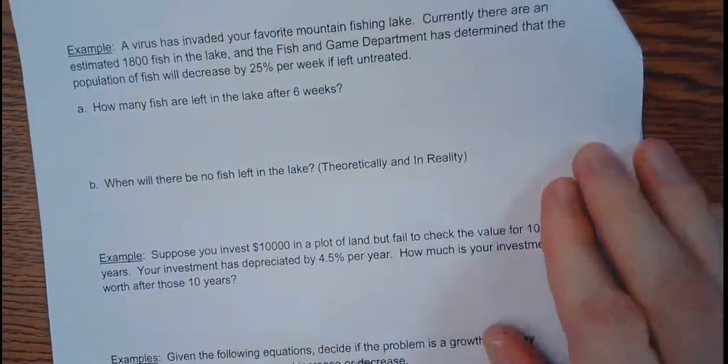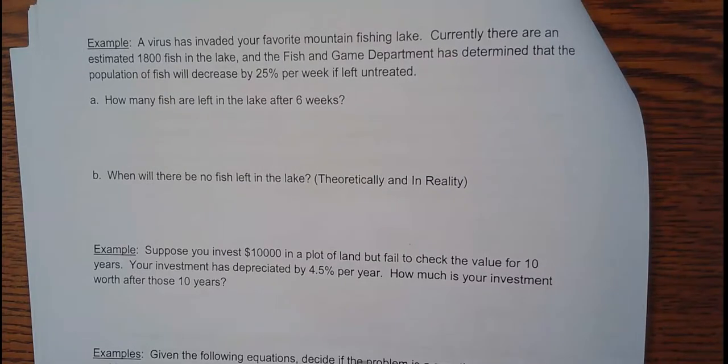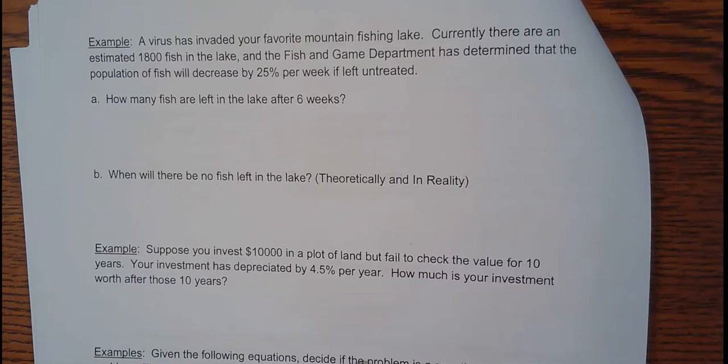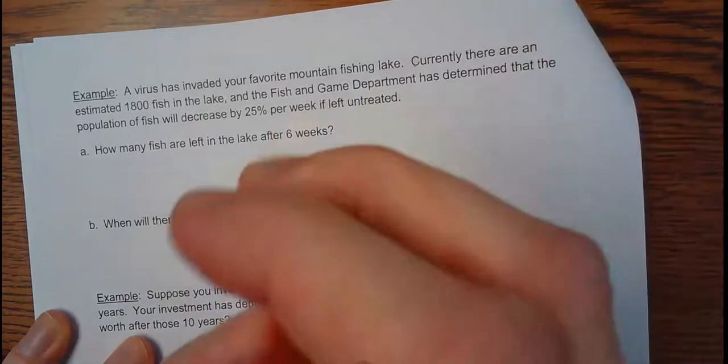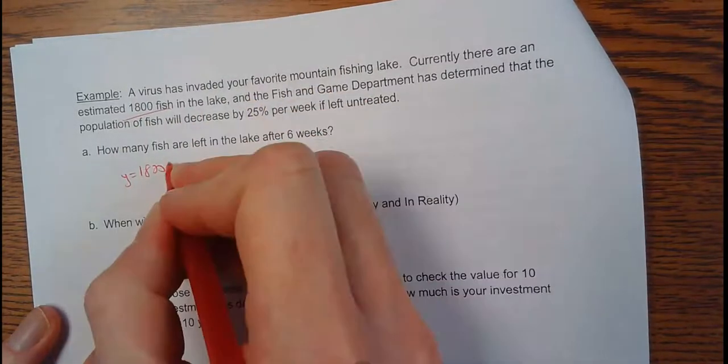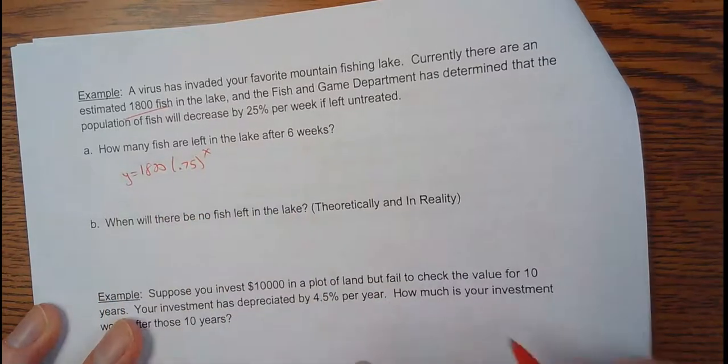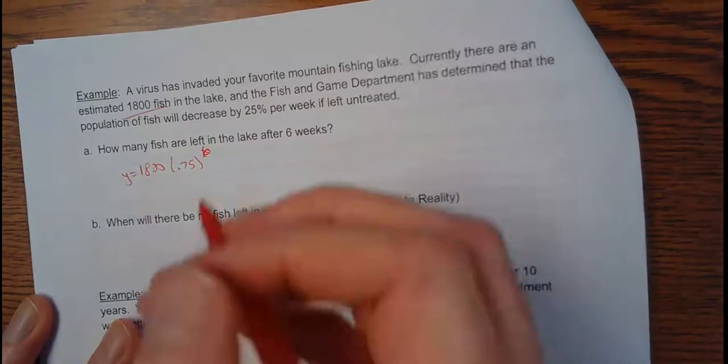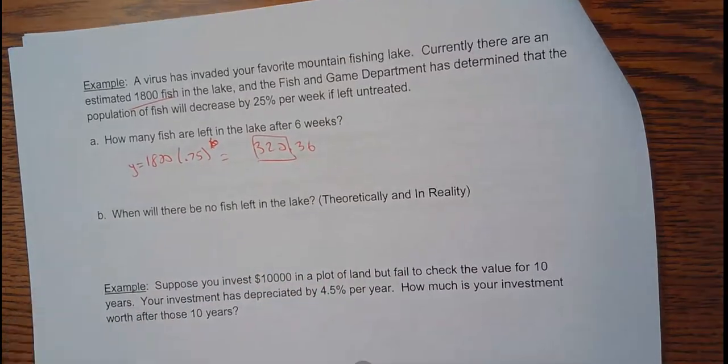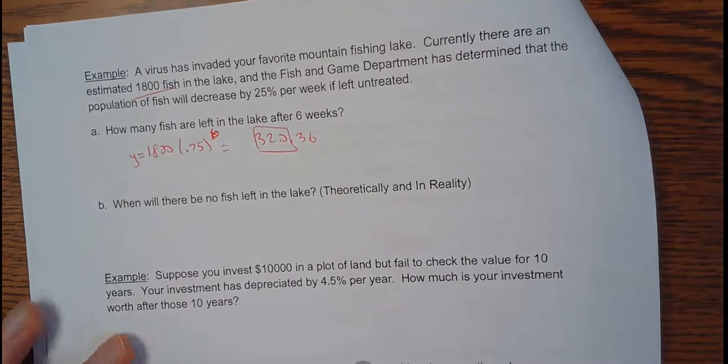A virus has invaded your favorite mountain fishing lake. Currently, there are an estimated 1,800 fish in the lake. The fish and game department has determined that the fish population will decrease 25% per week if we don't do anything about it. So, first off, how many fish are left after six weeks? Let's just write the model here. The initial value is 1,800. And we're going to lose 25%. That means we're going to keep 75%. So, 0.75. And then I'm going to put a six in here right now. Type that in the calculator, you get 320.36. Basically, 320 fish after six weeks. Now, you were at 1,800. Now, you're at 320. You're losing your fish pretty fast.